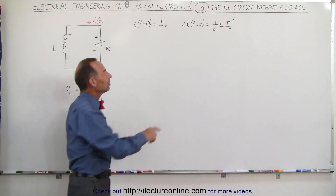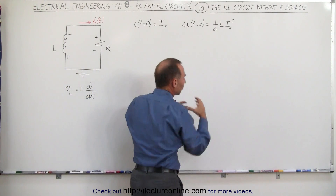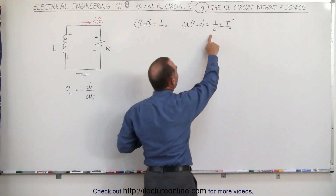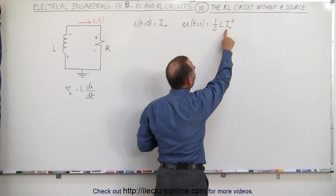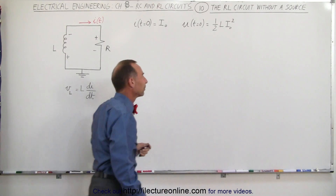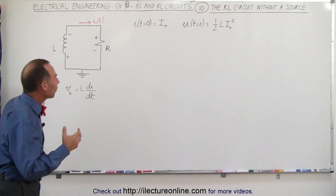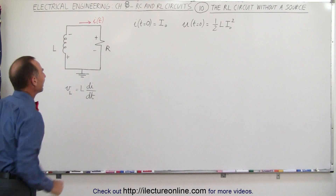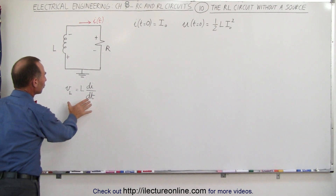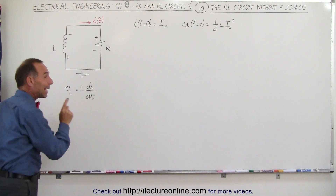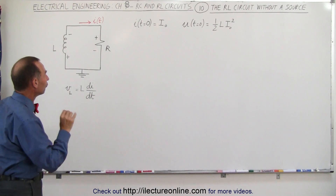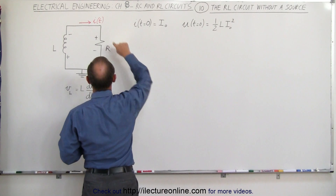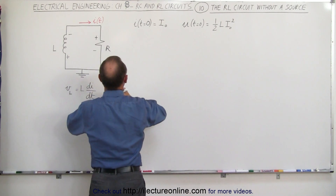The initial energy on an inductor — because it has built up a magnetic field that stores energy — is equal to one-half the size of the inductor times the initial current squared. So how do we come up with an equation that describes the current inside the circuit? We're going to use this equation right here and Kirchhoff's voltage law — KVL — summing up all the voltages around the circuit.